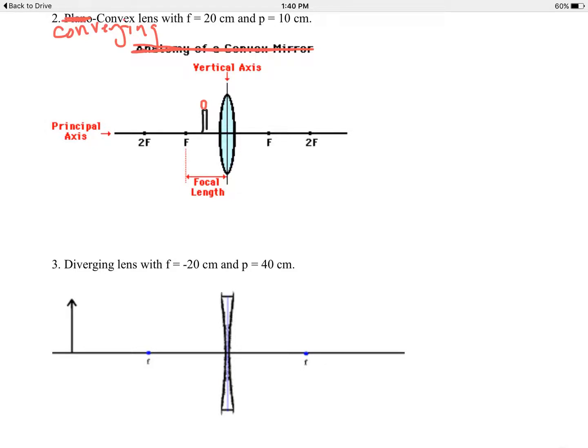Our technique once again is to draw two or three rays to locate the image. And the one that's almost always a slam dunk is to draw the ray of light given off by or reflected by the object that is parallel to the principal axis.